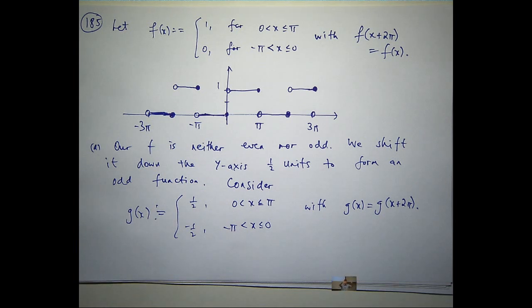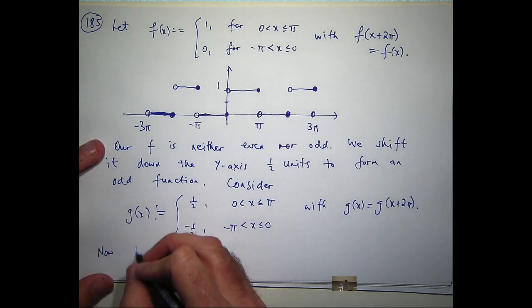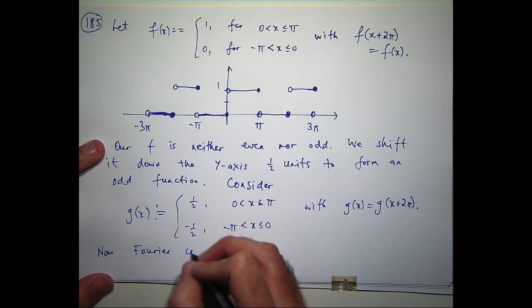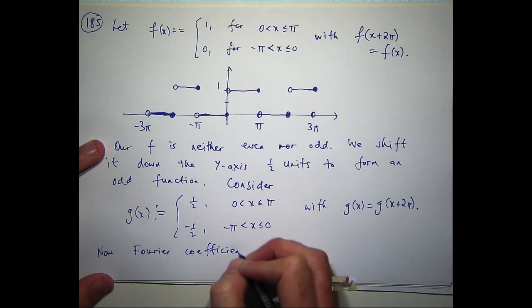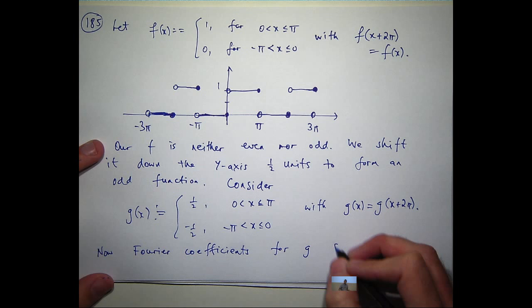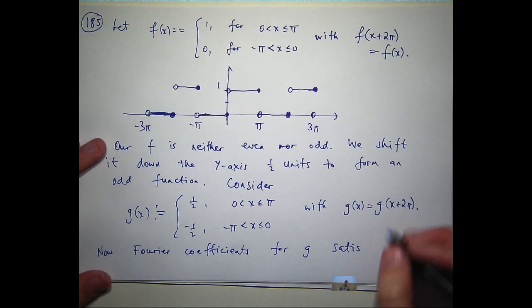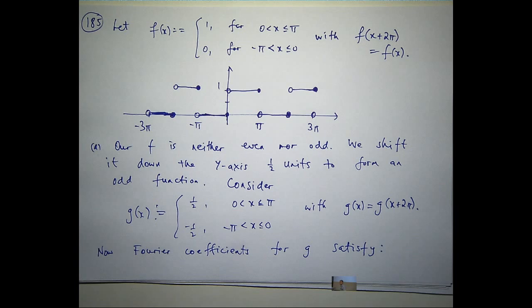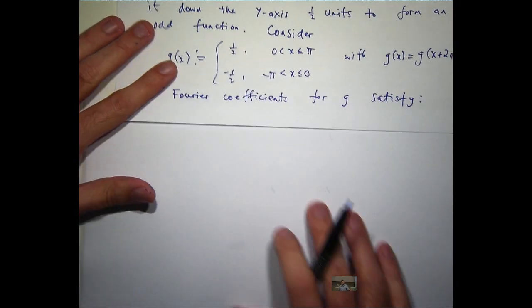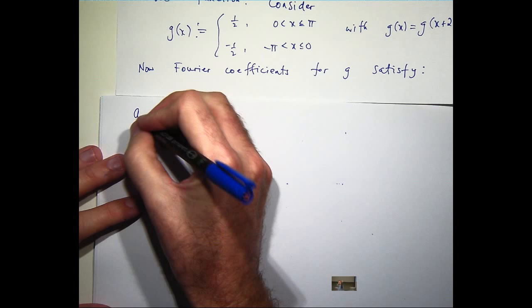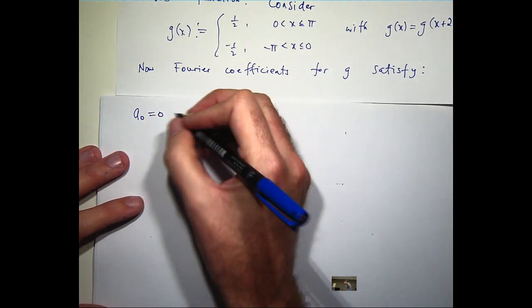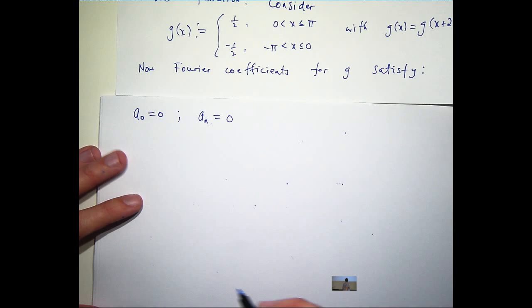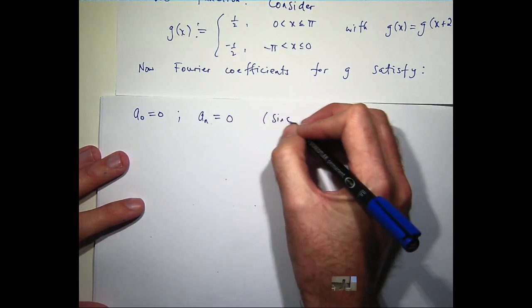So it's going to be a half and minus a half. Now, the best thing. If I want to calculate the Fourier coefficients for my g, and g is an odd function, a_0, a_n is 0. That's it. That's all I have to do.